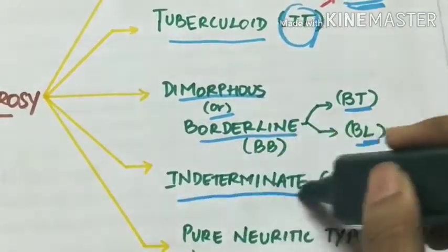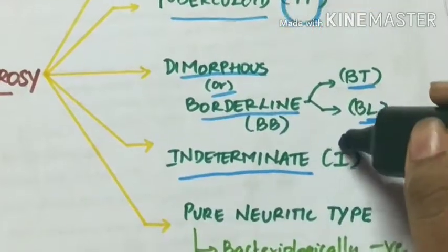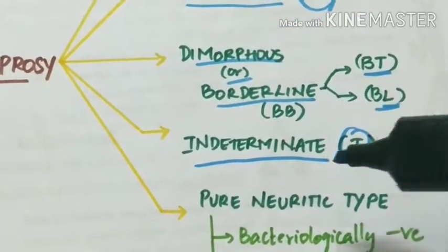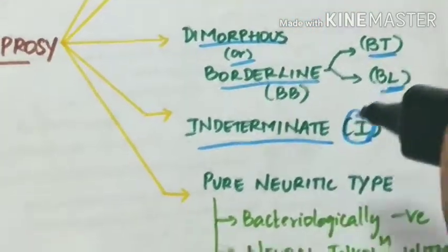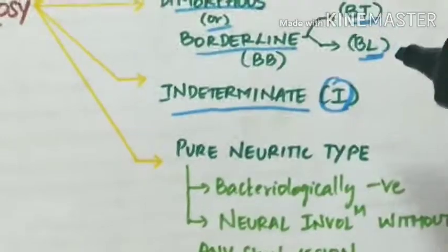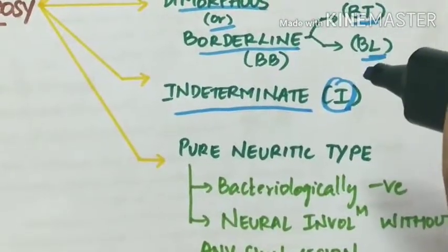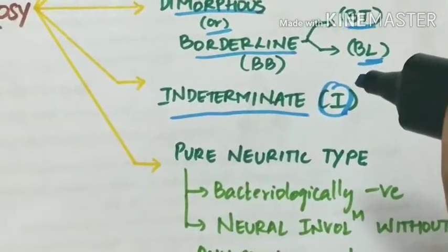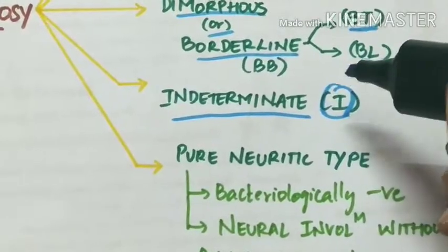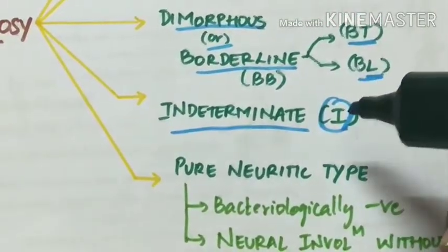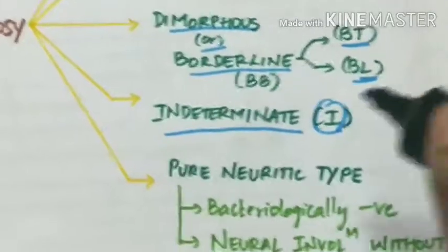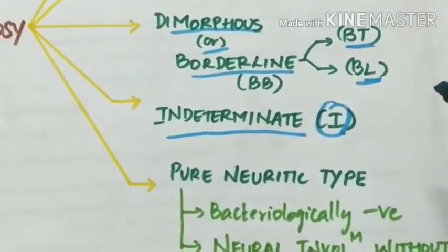The indeterminate type (I) is the early unstable tissue reaction. In many persons, the indeterminate lesions undergo spontaneous healing. In others, they may progress to the tuberculoid or lepromatous types.